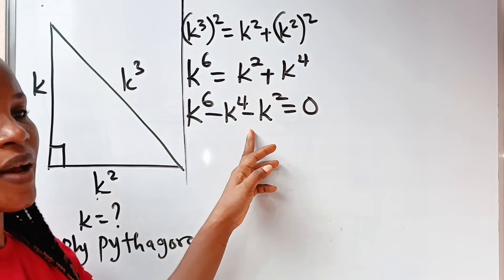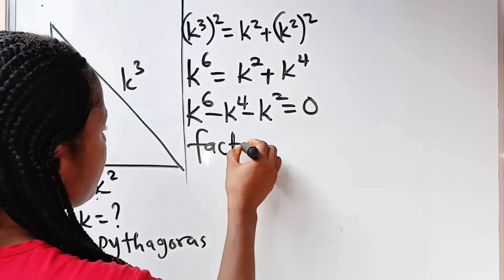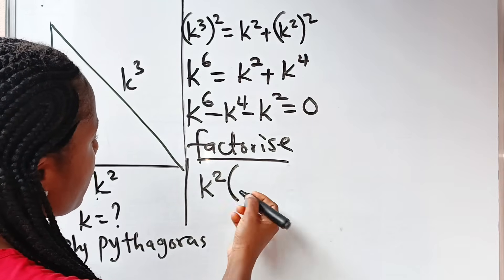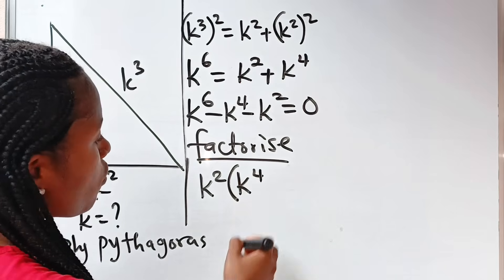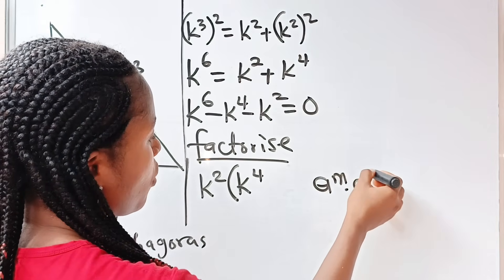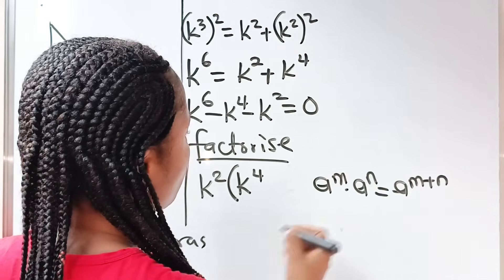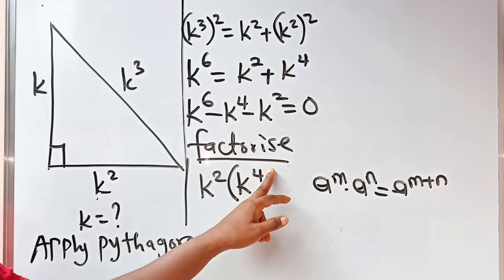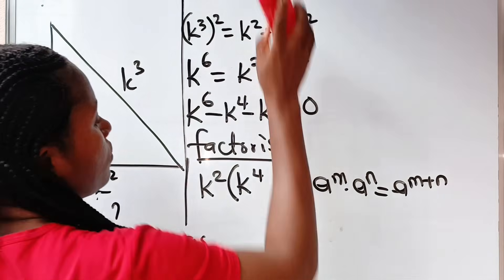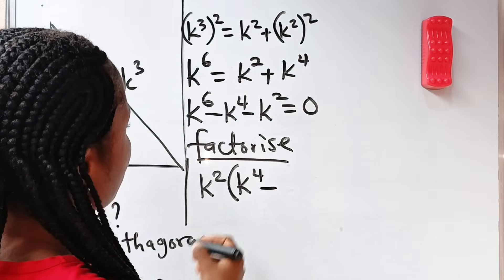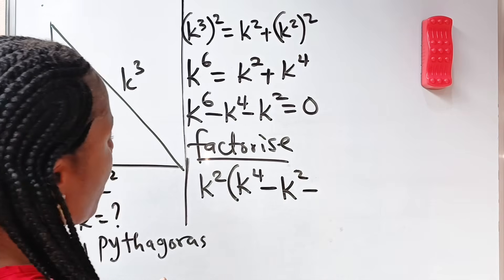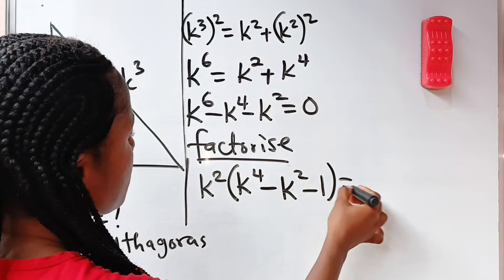Now if you look at this, we can factorize K squared. So if we do that, we have K squared in brackets. When K to the power of 6 is divided by K squared, we are left with K to the power of 4, because whatever we add to 2 must give 6, so 6 minus 2 gives 4. Similarly, K to the power of 4 divided by K squared leaves K to the power of 2, minus 1, all equal to 0.